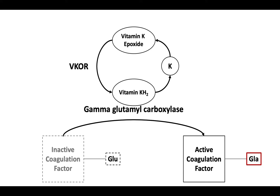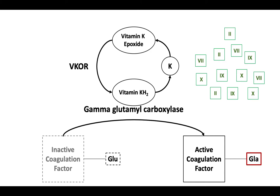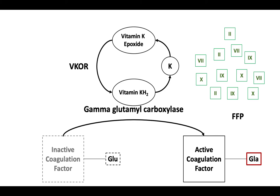Alternatively, the cycle can be restored by direct addition of the vitamin K-dependent factors 2, 7, 9, and 10. These factors are found in concentrated form in four-factor prothrombin complex concentrates. They are also available in dilute form in FFP, or fresh frozen plasma.